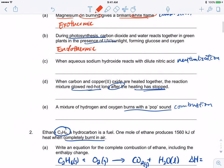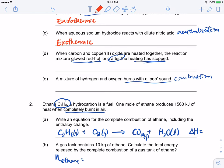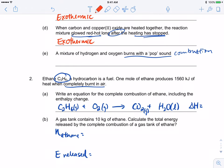When aqueous sodium hydroxide reacts with nitric acid, neutralization is also exothermic. When carbon and copper oxide are heated together, the reaction mixture glows red hot long after heating has stopped. Even after heating has stopped, heat is still being produced meaning that is exothermic. A mixture of hydrogen and oxygen burns with a pop sound. This is the mini explosion, it is also exothermic.